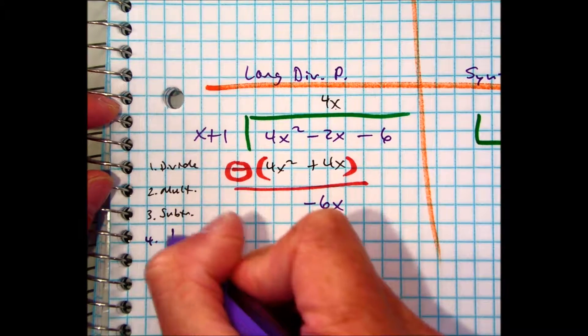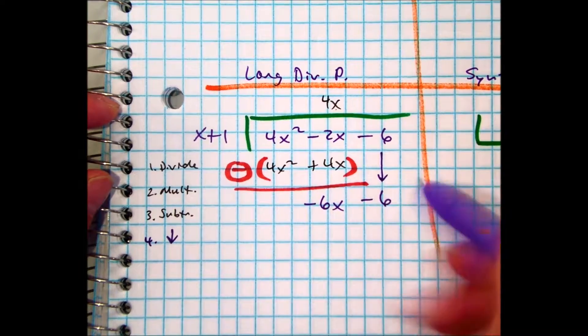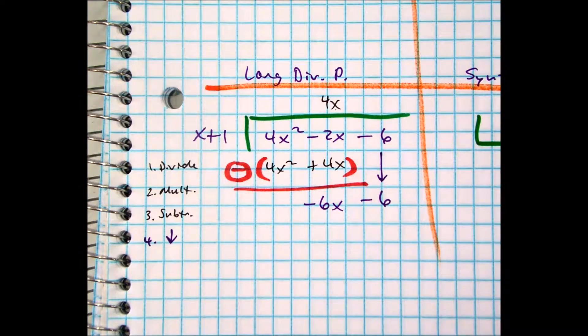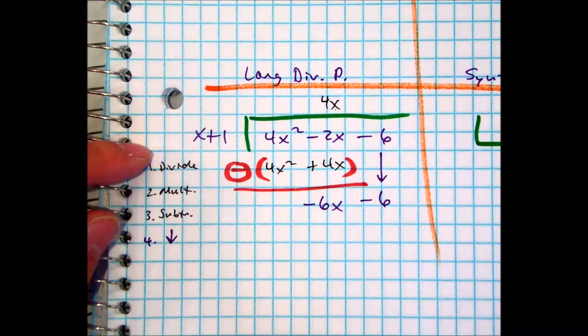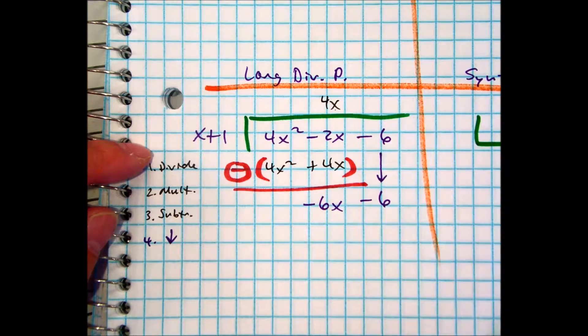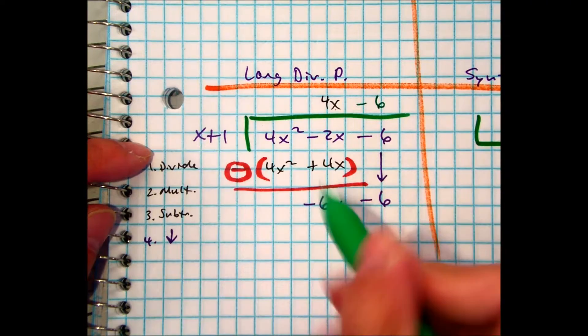Then you can just draw an arrow because you're bringing this down, so I have minus 6. And x goes into negative 6x how many times? Negative 6. Multiply, what do I get?